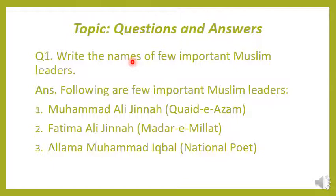Number two: Fatima Ali Jinnah — Madre Millat, meaning Mother of the Nation. Fatima Ali Jinnah was the sister of Quaid-e-Azam. She worked side by side with him and gathered and empowered all women to work towards the freedom movement. Number three: Allama Muhammad Iqbal, the national poet, also known as Shair-e-Mashriq. These are the three important personalities focused in this chapter.